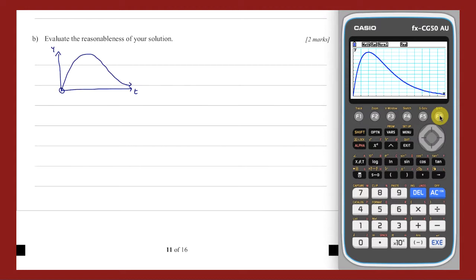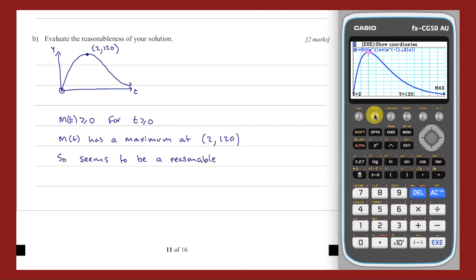The location of the maximum of my model can be found using the G-solve menu. F5 opens this menu, and F2 determines the maximum. We can see it is located at the point (2, 120). So, the model M of t is non-negative for t greater than or equal to 0, and has a maximum at the point (2, 120). And so, for those reasons, seems to be a reasonable fit for the scenario described.